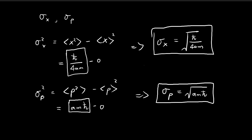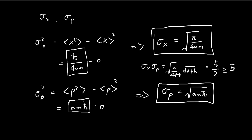Now we can check the uncertainty principle. If we multiply these two standard deviations together, you can see that some terms cancel out — the a's cancel out, the m's cancel out. You have two square roots of ℏ, which gives ℏ itself, and then the square root of 4 is just equal to 2. So the product is equal to ℏ divided by 2, which satisfies the relationship that σ_x · σ_p is always greater than or equal to ℏ/2. In this case, it is exactly equal to ℏ/2, and so the uncertainty principle is indeed satisfied.